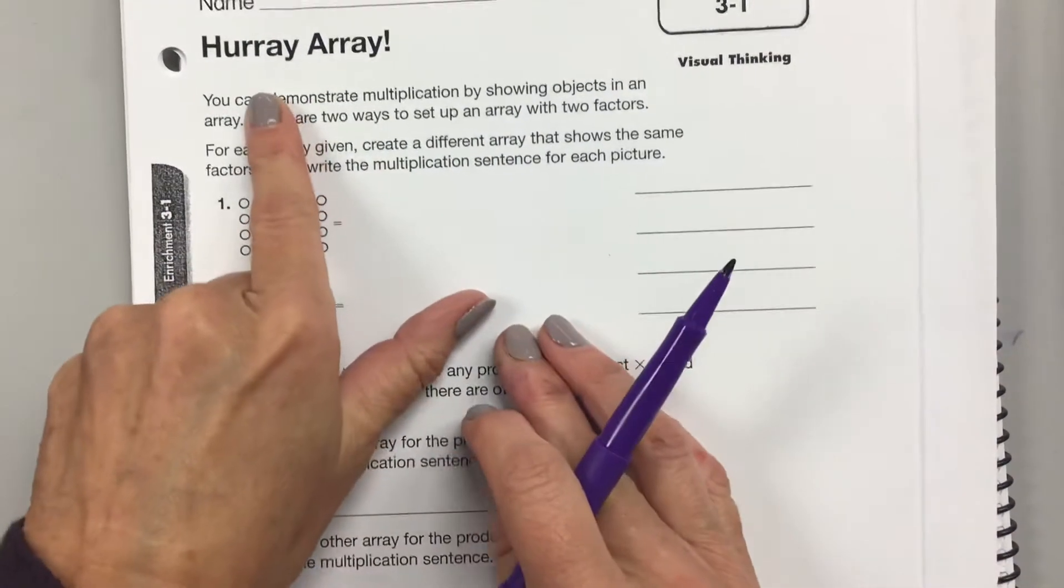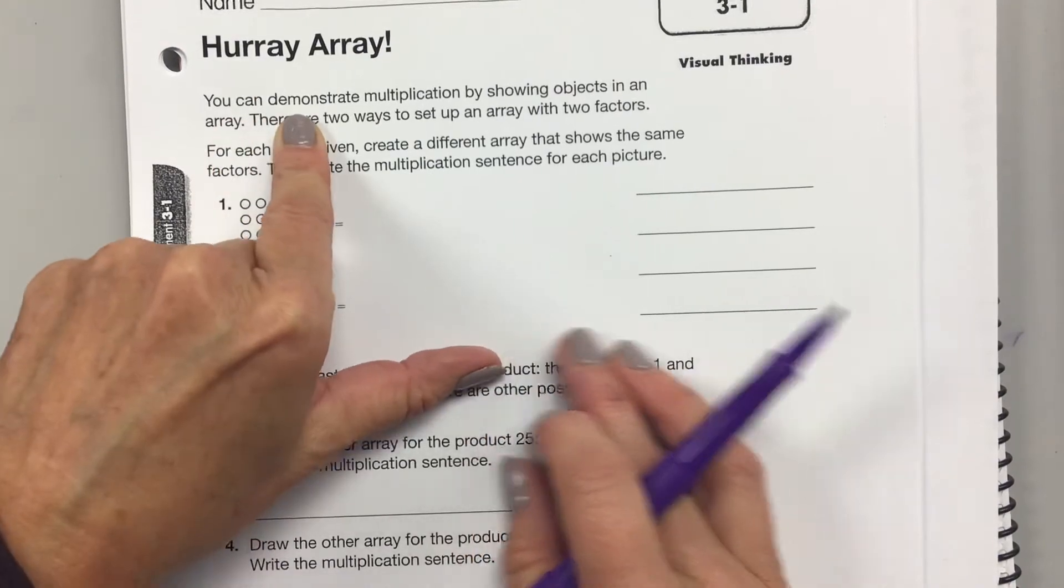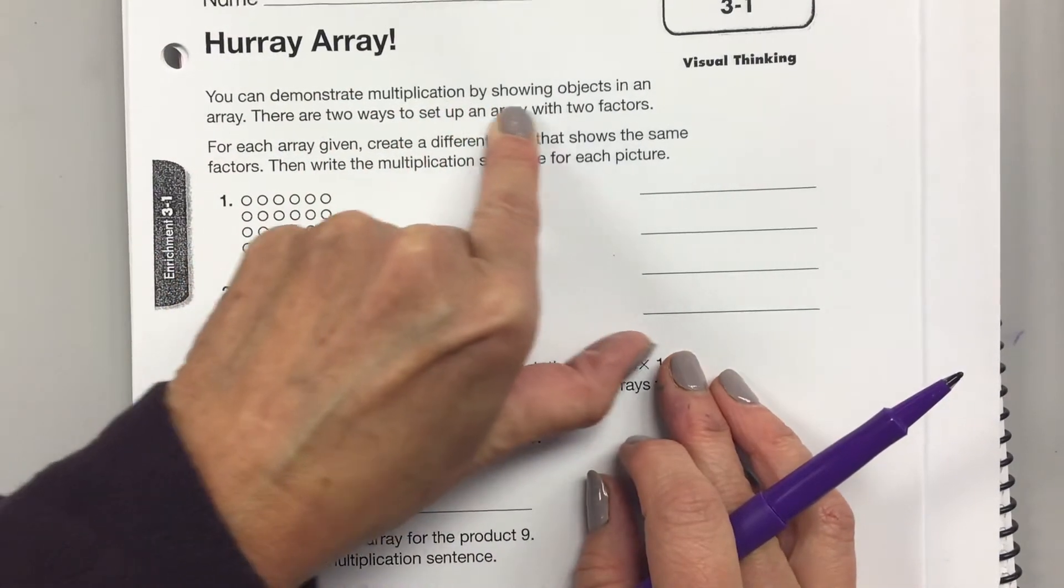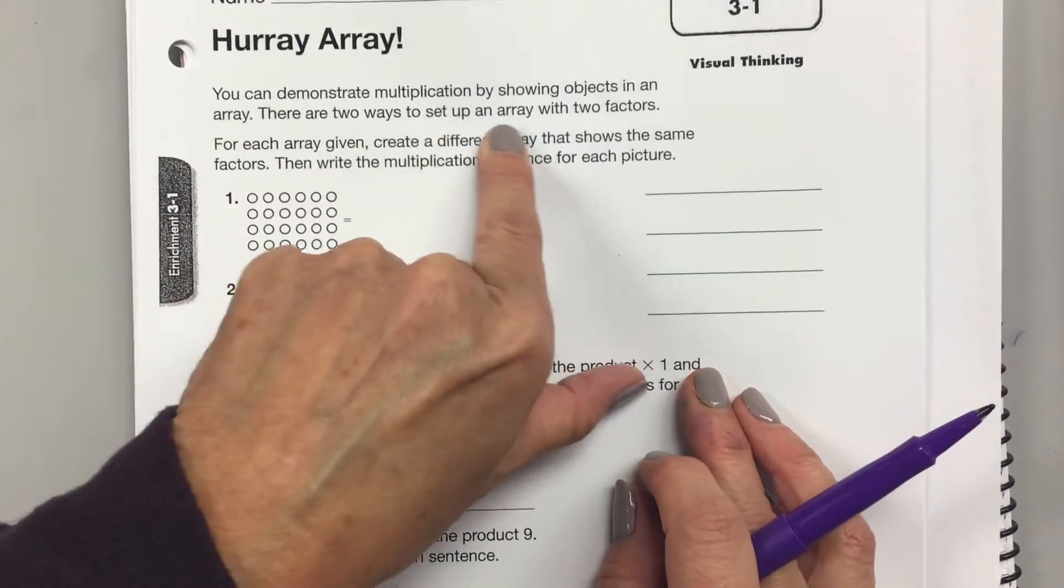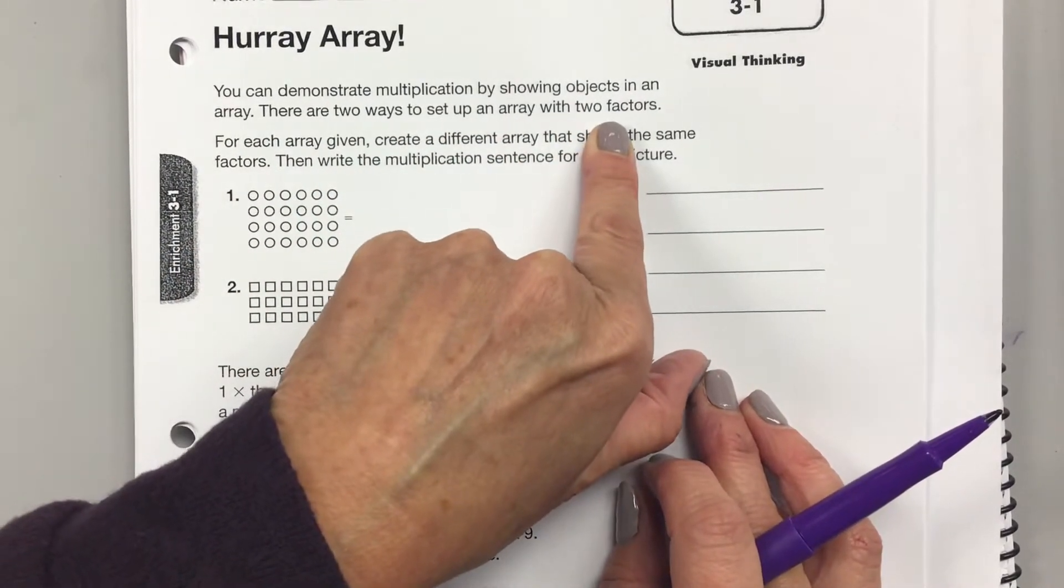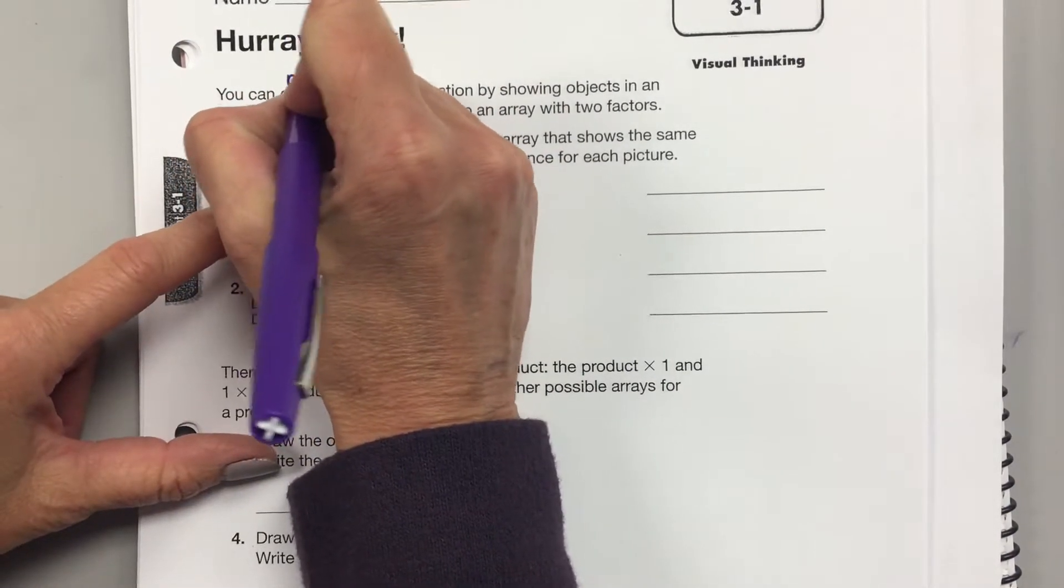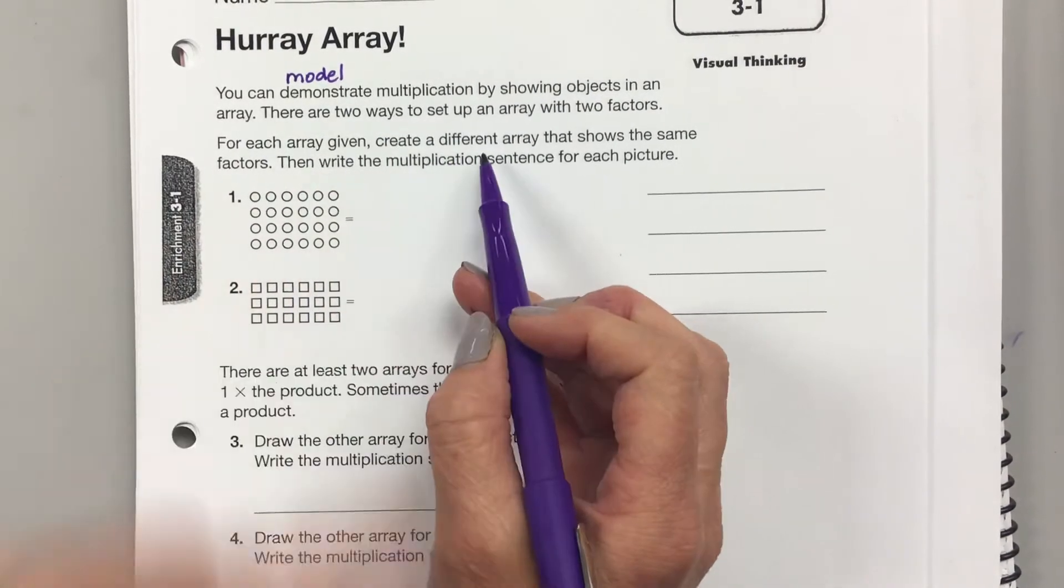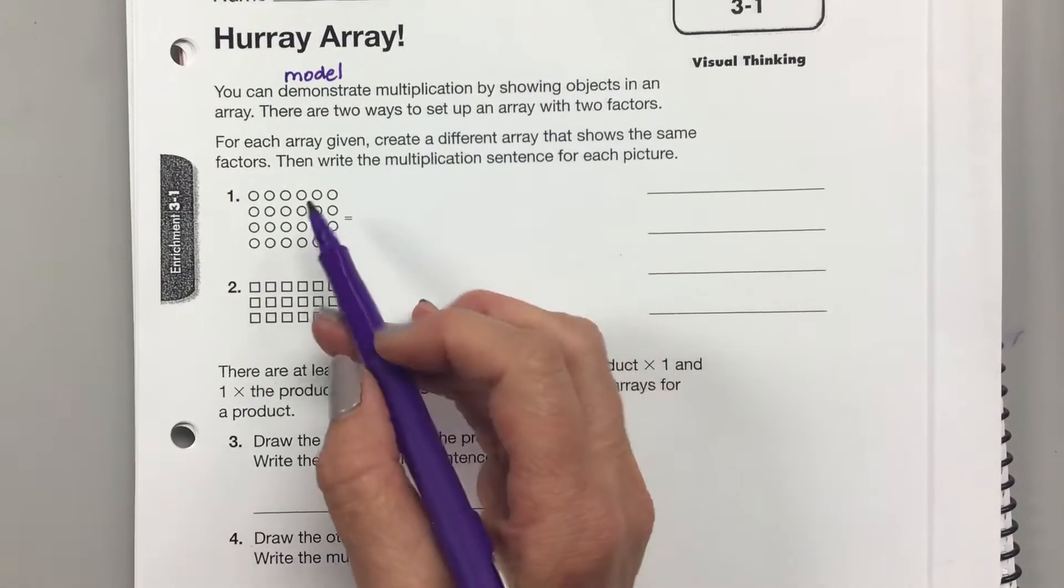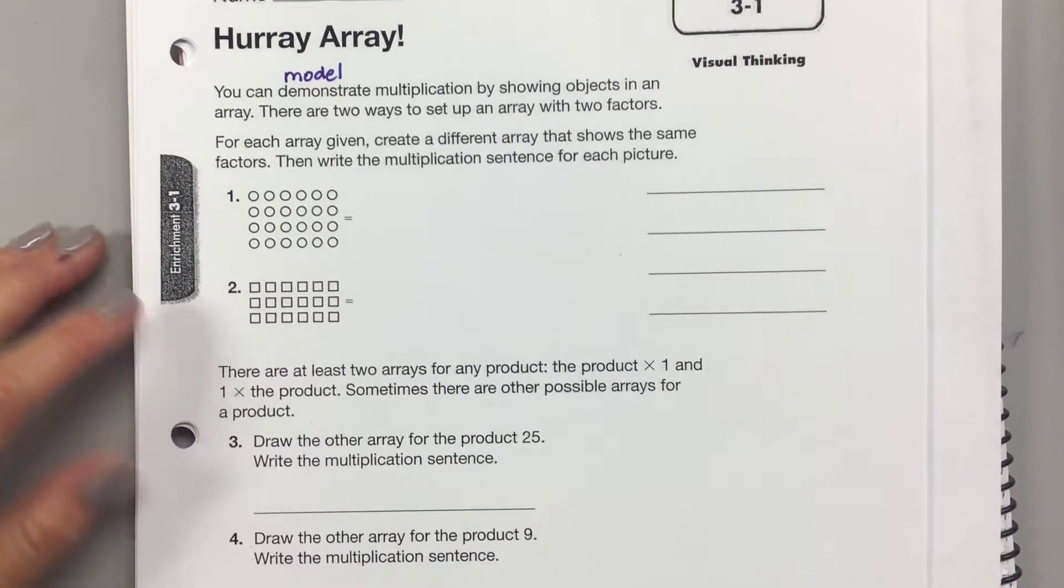Okay, so let's review arrays. Let's just read this part together. You can demonstrate multiplication by showing objects in an array. There are two ways to set up an array with two factors. What is demonstrate? It's the same as model. For each array given, create a different array that shows the same factors. Then write the multiplication sentence for each picture.